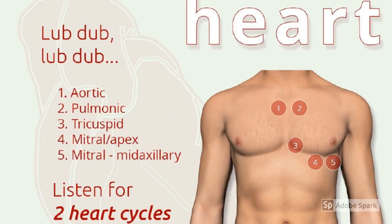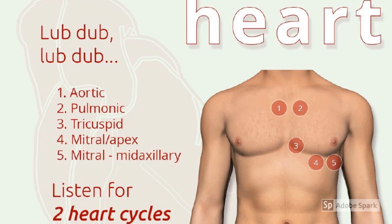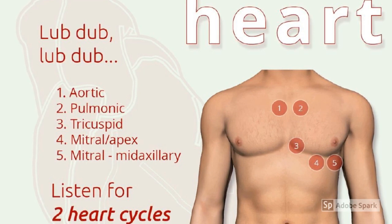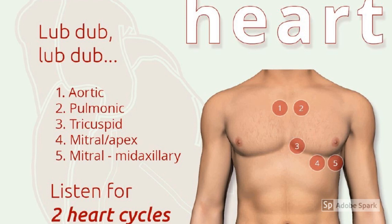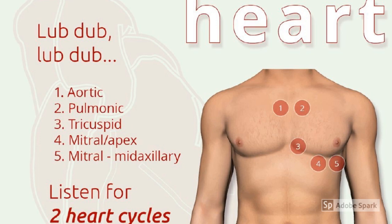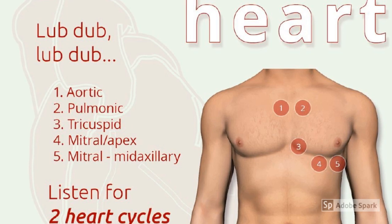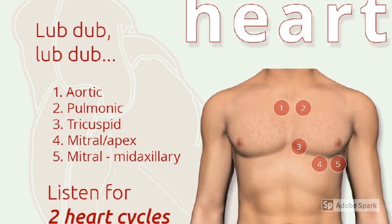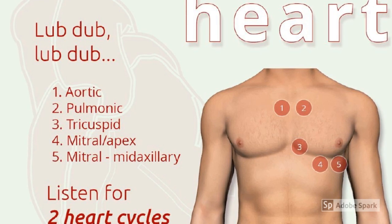While you are at the thorax, it is important to also make sure that you listen to the heart. Listen for that lub-dub, lub-dub — you want to listen for at least two cycles in the various positions. Here you can see that you can listen to the aortic, pulmonic, and tricuspid valves as well as the mitral valve, and you can also listen to the mitral valve on the mid-axillary side.